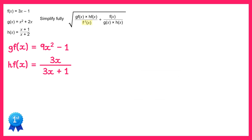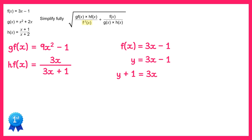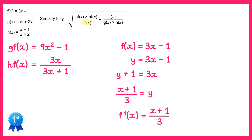Now we'll look at f inverse of x. The function for f is f of x equals 3x minus 1. Let's replace the f of x with y and rearrange to make x the subject. If we add 1 to both sides we get y plus 1 equals 3x. Dividing both sides by 3 gives y plus 1 divided by 3 equals x. Swapping the x's and y's around, we end up with f inverse of x equals x plus 1 over 3.